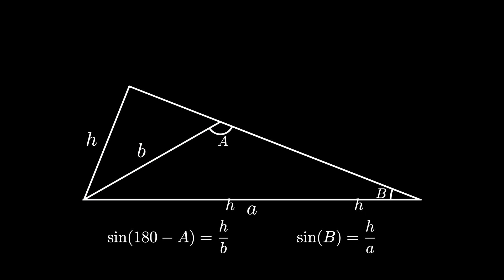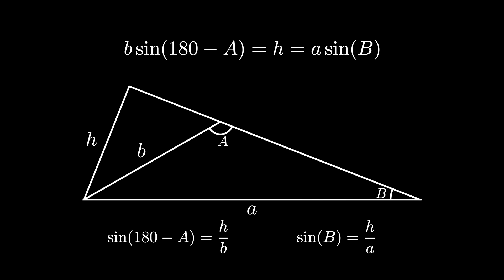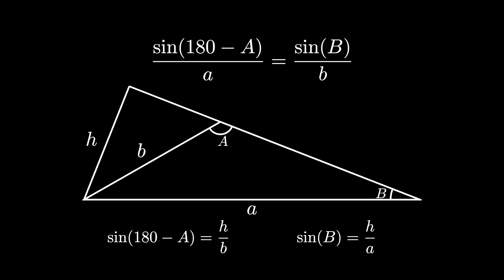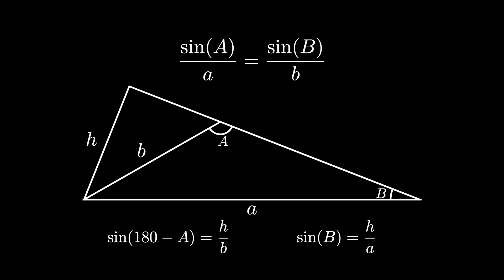Once again, both of these equalities involve the quantity H, so we see that H is equal to B times the sine of 180 minus A, and H equals A times the sine of angle B. We can divide both of these quantities by A times B, so that sine of 180 degrees minus A over A is equal to sine of angle B divided by B. But now we use the fact that sine of 180 degrees minus A is equal to the sine of angle A. This means that the sine of angle A divided by side length A is equal to the sine of angle B divided by side length B.